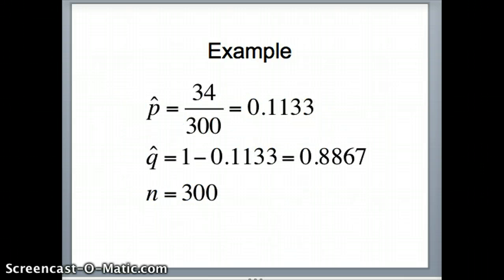Our p-hat, 34 out of 300, is 0.1133, our probability of being a man. Q-hat is the other set, that's 0.8867, 1 minus the probability of being a man, which of course is the probability of being a woman. N is 300. So we have the information we need, and we're going to use this to find the confidence interval.